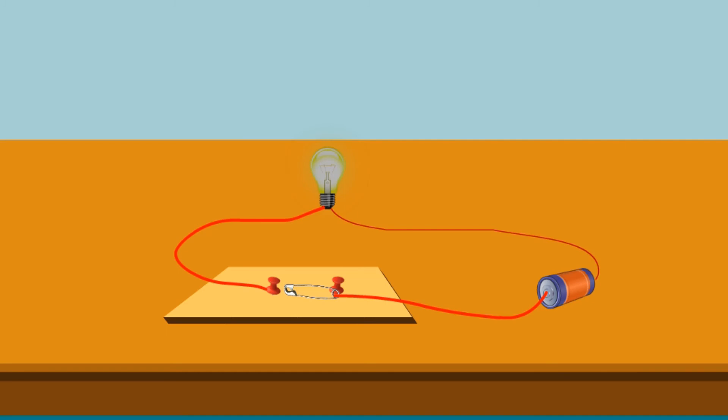Now rotate the safety pin and touch it to the other board pin. And wow, the bulb starts glowing! The safety pin acts as an electric switch. When it touches both the board pins, the circuit is closed and the current flows through it. Hence, the bulb glows. The switch is said to be ON.